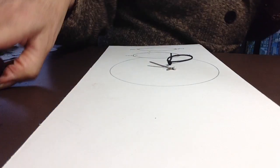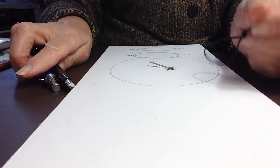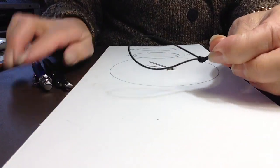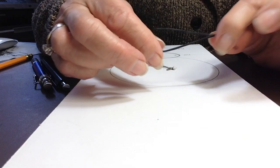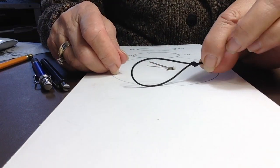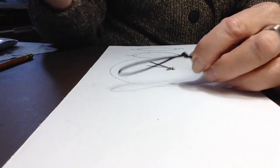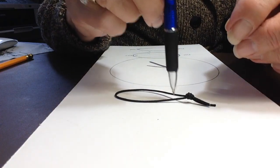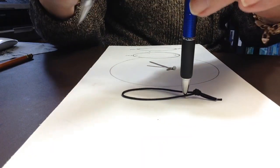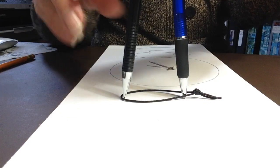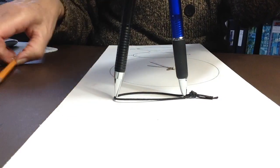One of them is to take a piece of string about seven inches long and tie a knot in it. And then you take two pencils and depending on the size of the ellipse that you want, you can hold this pencil about like that.